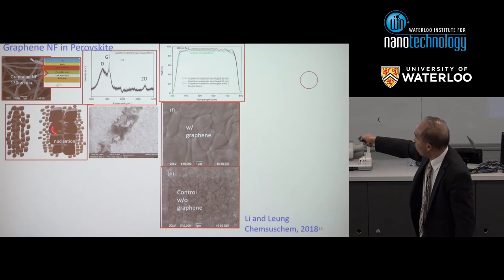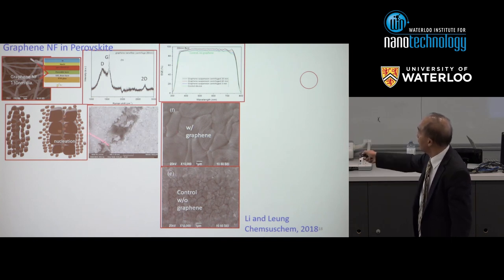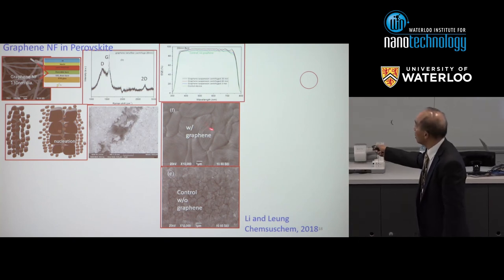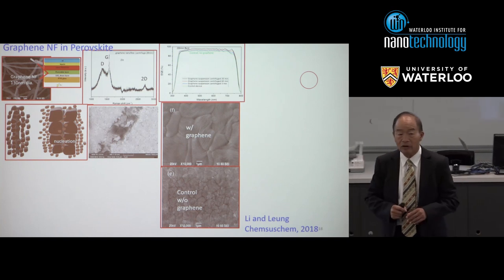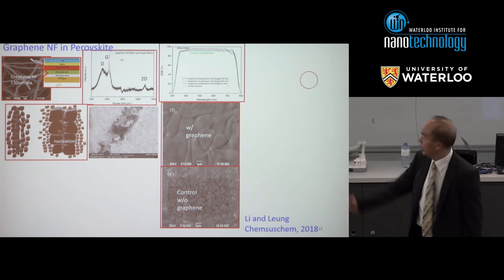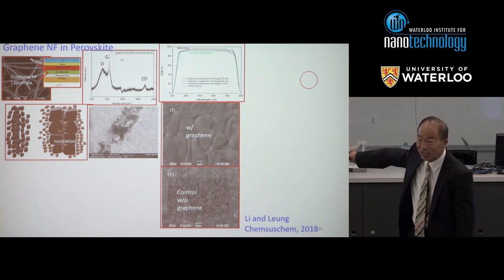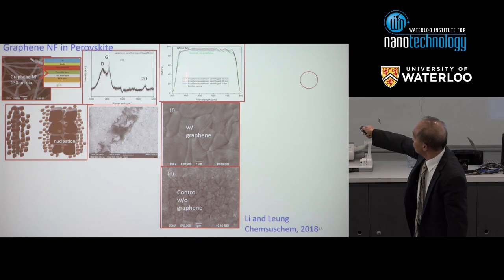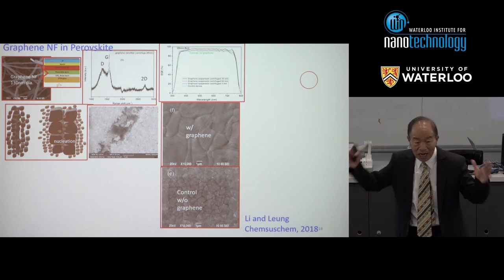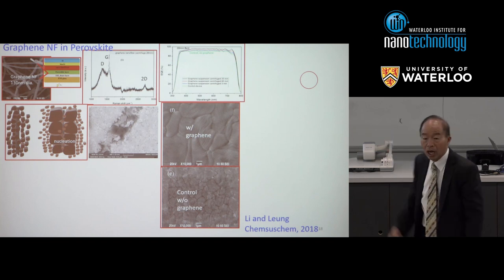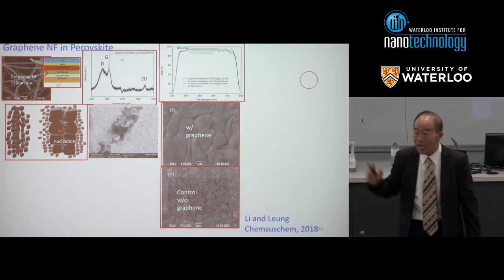Compared to the control without graphene nanofibers, the crystals are much larger. The EQE as a function of wavelength shows that with all graphene, we have an excellent EQE of about 90% across 300 to 800 nanometers. Once we add this technology, performance goes to 95%, also very uniform. This is excellent for harvesting light.